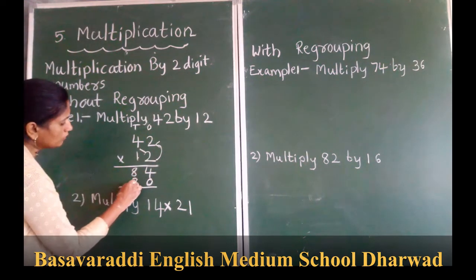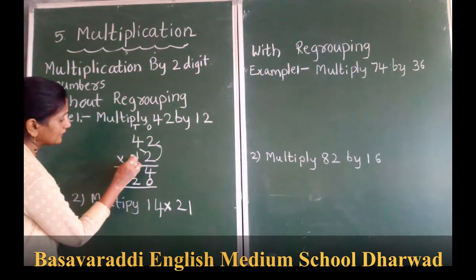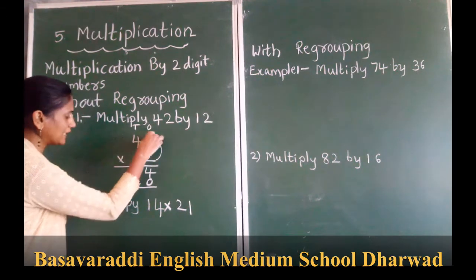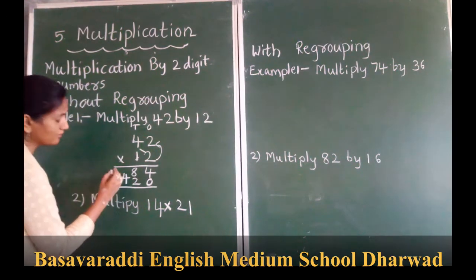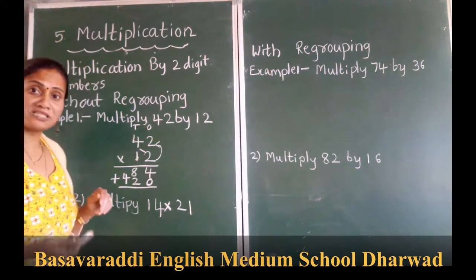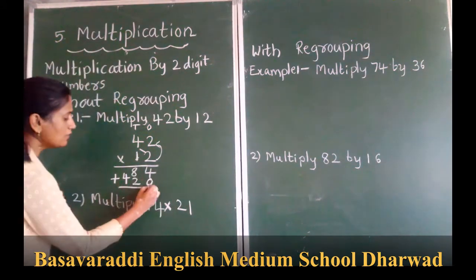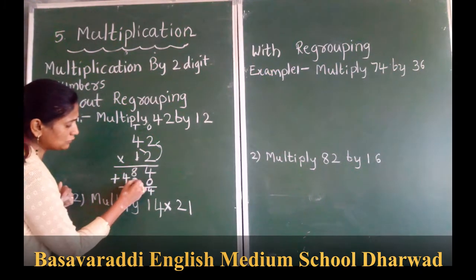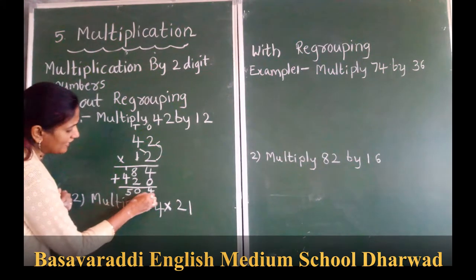So 2 ones are 2 and 1 times 2 is 2, and 1 times 4 is 4. So we have to add. Multiplication means we are repeating the addition. 4 plus 0 is 4, and 8 plus 2 is 10. 1 is carry over and 1 plus 4 is 5. So the answer is 504.